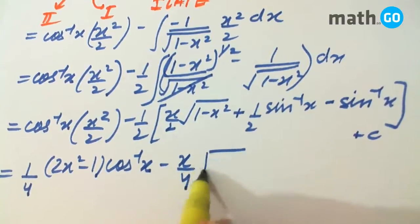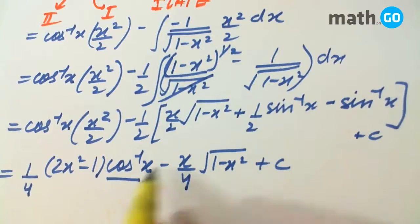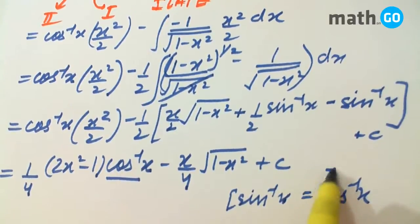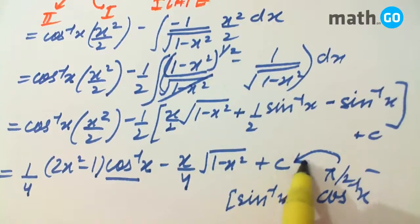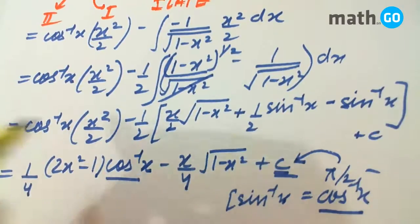Now, if cos inverse here, we can always write sin inverse x as cos inverse x, pi by 2 minus cos inverse x. Now, if you just pi by 2 here, that gets included in the constant c. Hence, our answer in the form cos inverse x. Thanks.